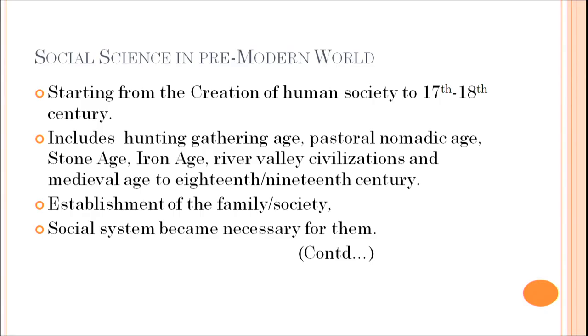Social science in the pre-modern era — when we talk about the pre-modern era, we are talking from the creation of human society to the 17th to 18th century. This includes the hunting-gathering age, pastoral-nomadic age, stone age, iron age, then different river valley civilizations across the world, and medieval ages to the 18th and 19th century.